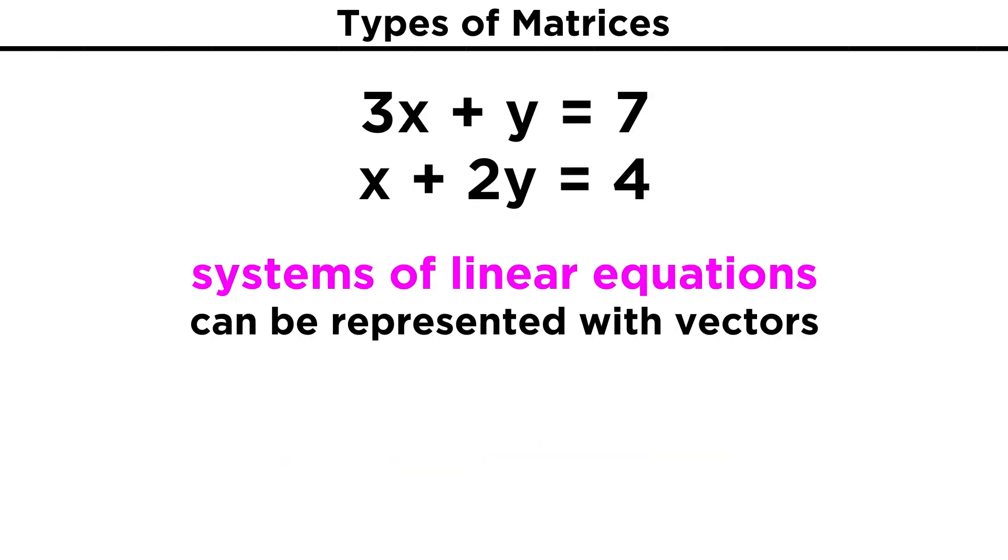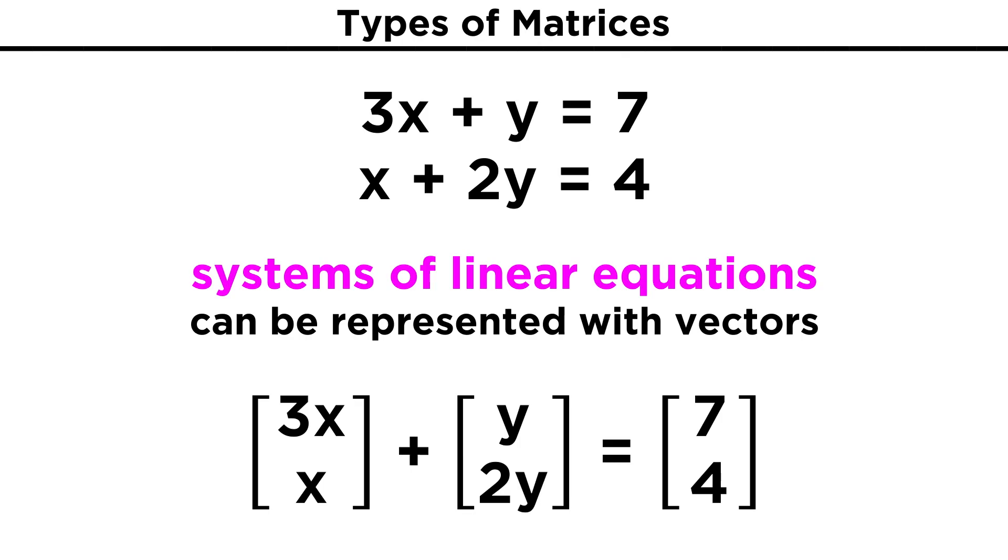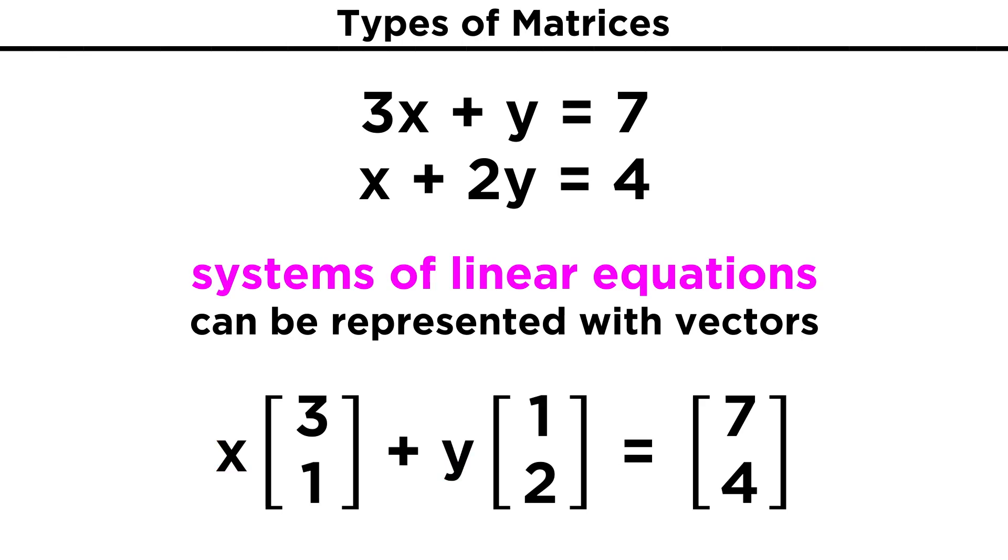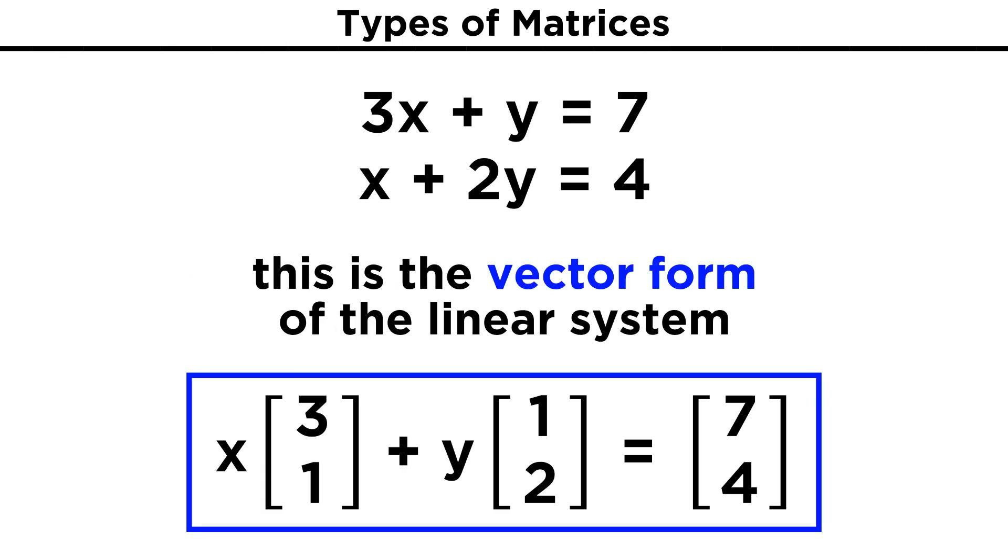We can even represent systems of linear equations themselves using vectors. Take this system of two equations: three x plus y equals seven, and x plus two y equals four. Apart from generating an augmented matrix, we could use individual vectors to represent the coefficients for each variable. First, we'd generate three separate matrices, one with the x terms, plus the second with the y terms, and the third with the constants on the other side of the equal sign. Then we take x and y out of the first two, and we are left with the vector [7, 4] as being the sum of a scalar multiple of [3, 1] and a scalar multiple of [1, 2]. This is called the vector form of the linear system.